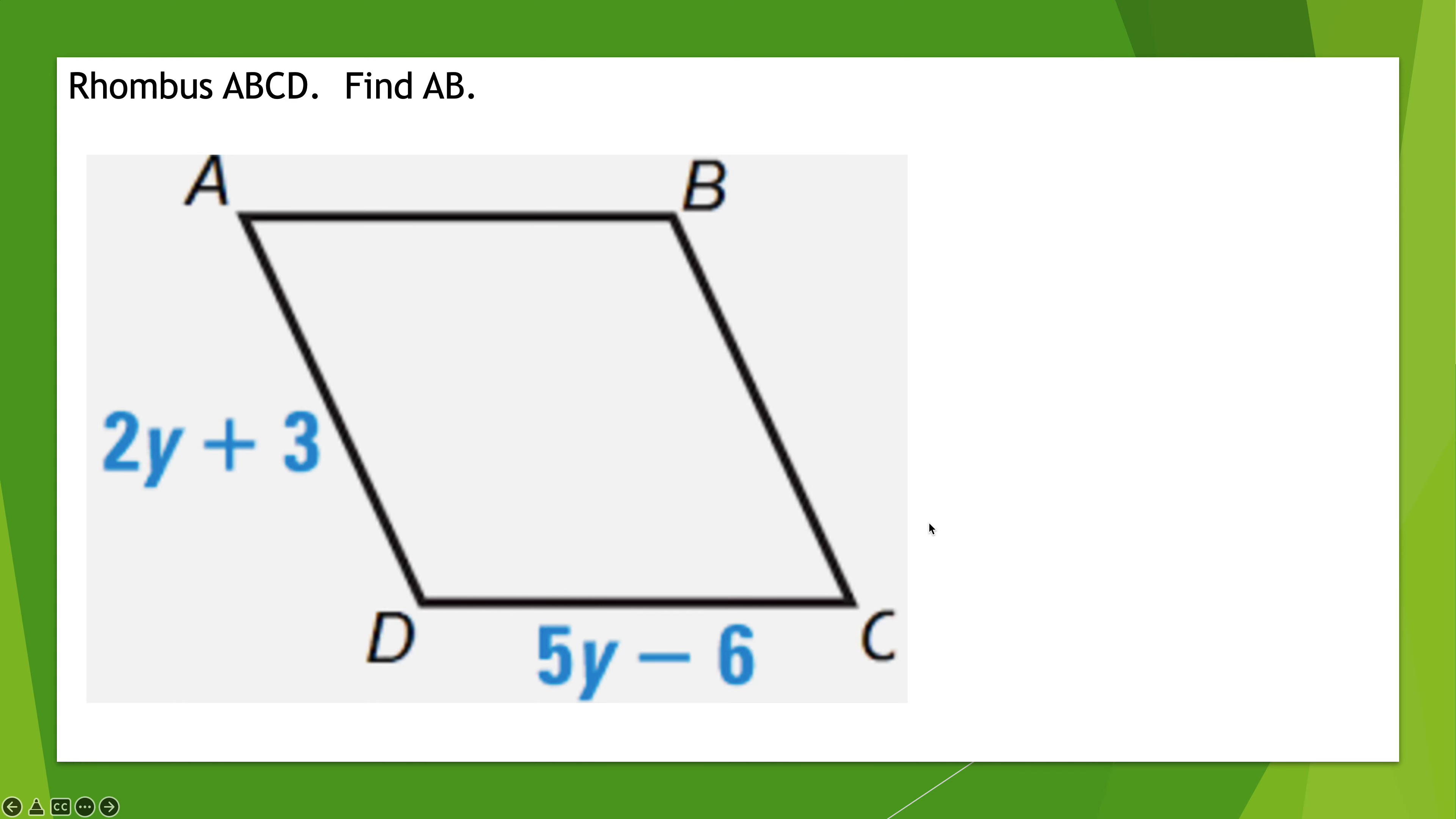Next up, rhombus ABCD. Find AB. And you might look up and say, what are you talking about? There's nothing in there about AB. No, there's not. But AB is going to be the same size as all the sides, because this is a rhombus. Okay? So, what do we have? Let's take the two sides we know. Find the value of Y. Plug it back in to get this value for AB.